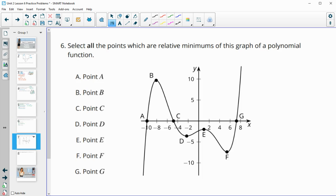Number 6, select all points which are relative minimums of the graph of the polynomial below. So remember when it's a minimum, on either side of the point the graph is going to be higher than it. So A is not good because we've got this side is below and this side is above. So that is not a minimum. B, the graph is below it on either side. So B is a maximum.